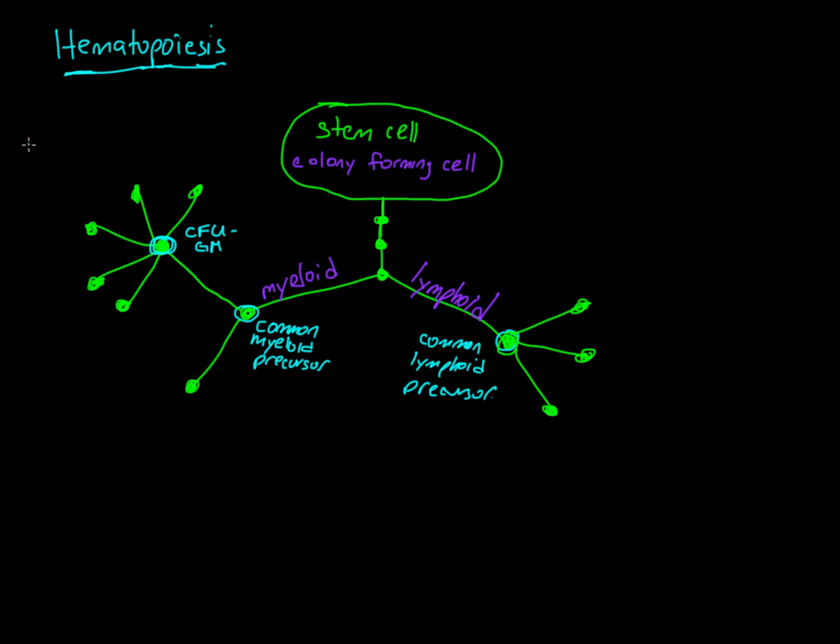Now, what are the granulocytes exactly? Let's remind ourselves. This includes the basophils, and the neutrophils, and the eosinophils, the mast cells, and the monocytes. So those are the granulocytes.